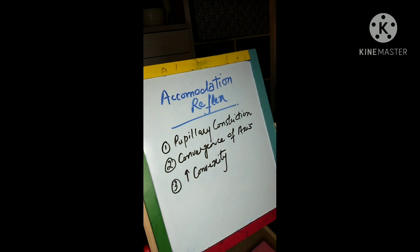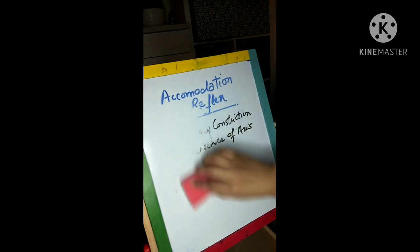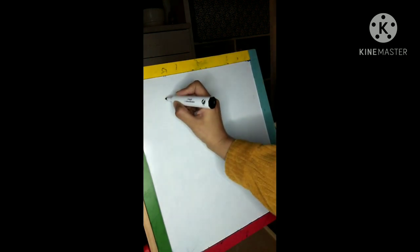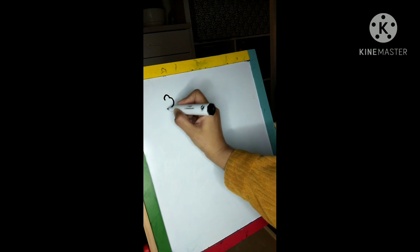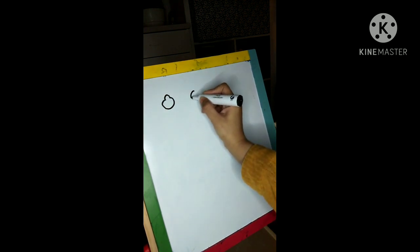In this diagram I will show actually three pathways: visual pathway, pupillary light reflex, and accommodation reflex. I will tell you how these are related to each other and how they are different. So it all starts from the eyes. Here I am going to draw eyes. So from the eyes...